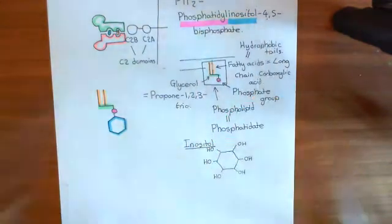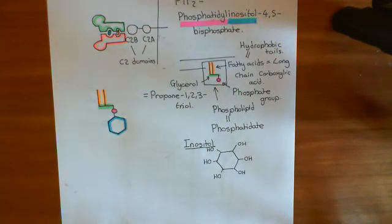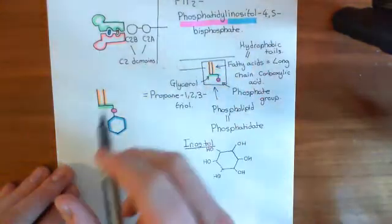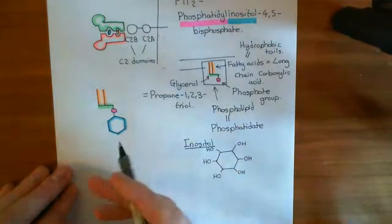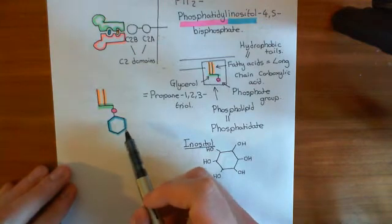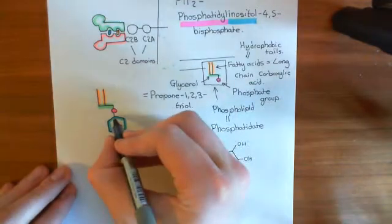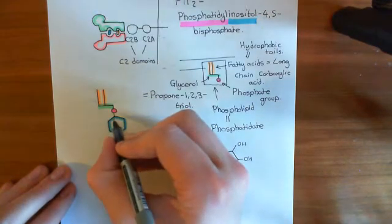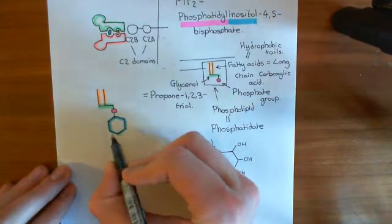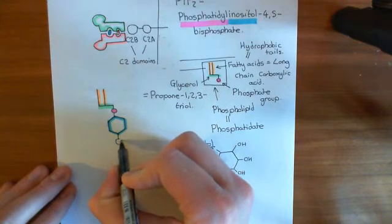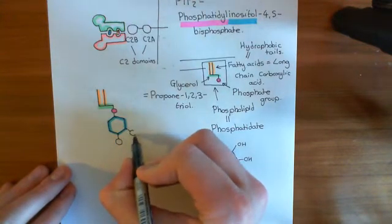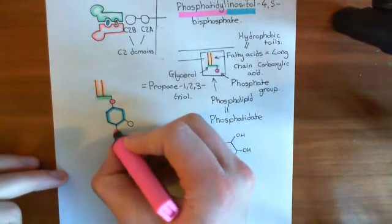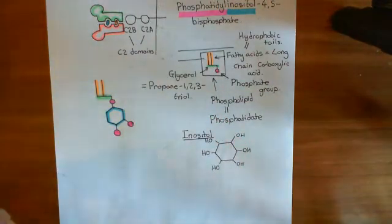We have taken our inositol ring and formed a phosphate ester link with the remaining hydroxyl group of the phosphate on the phosphatidate molecule — that gives us phosphatidylinositol. However, we want phosphatidylinositol 4,5-bisphosphate, so we need to add phosphate groups onto the fourth and fifth carbons of the inositol ring. Labeling from the carbon with something attached as carbon 1 and going around the ring: 1, 2, 3, 4 — add a phosphate; 5 — add a phosphate; and 6. This now is phosphatidylinositol 4,5-bisphosphate, or PIP2 for short.